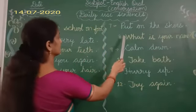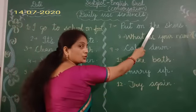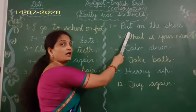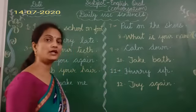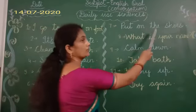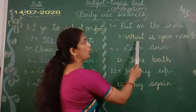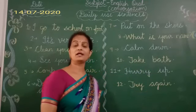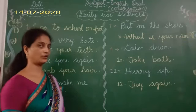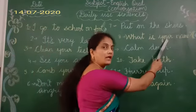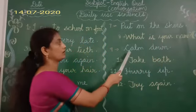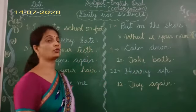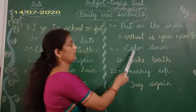Next sentence: Put on the shoes — joote pehan lo. Read again: Put on the shoes. Next sentence: What is your name? — aapka kya naam hai? Read again: What is your name? Next sentence: Calm down — shant ho jao. Read again: Calm down.